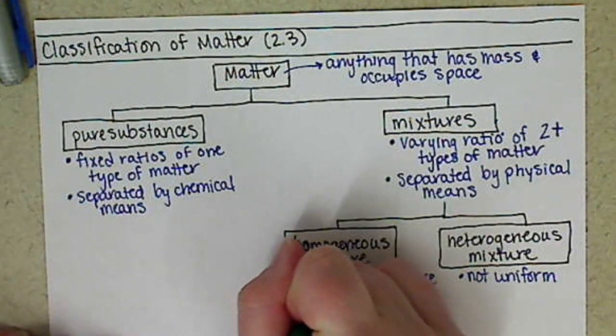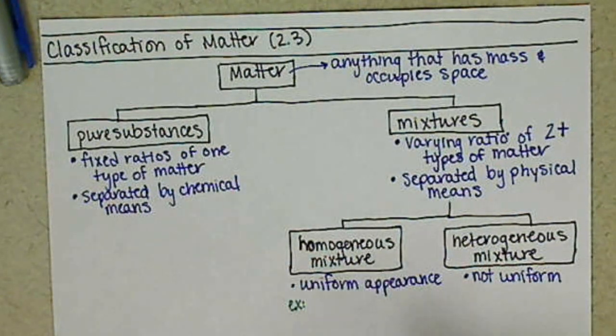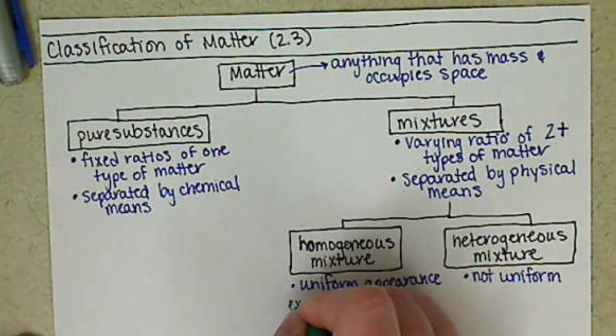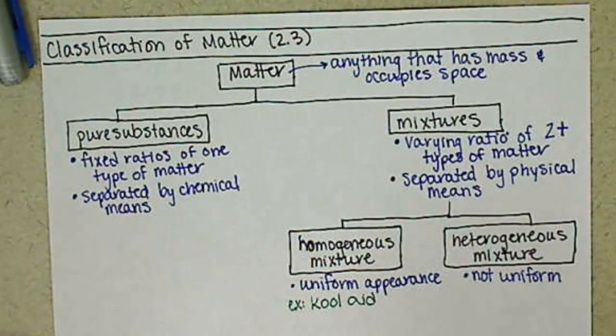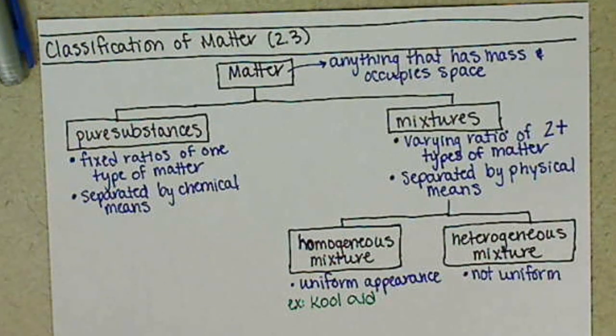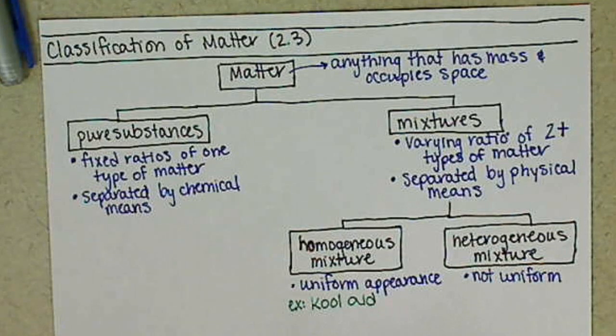Some examples, so we kind of know what we're talking about here. For a homogenous mixture, basically I like thinking about Kool-Aid. If we take a packet of Kool-Aid, dump it into a container, add some water, mix it around. Once we get that uniform appearance, it doesn't change throughout, we have a homogenous mixture.